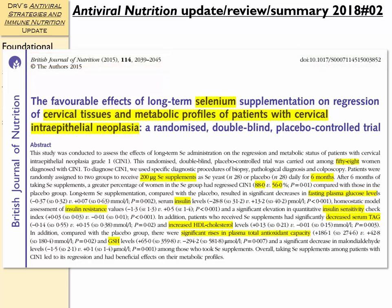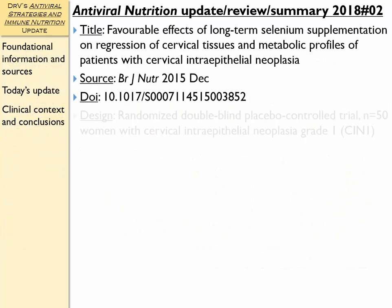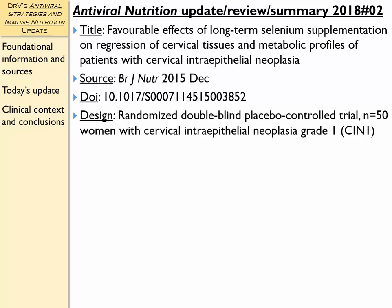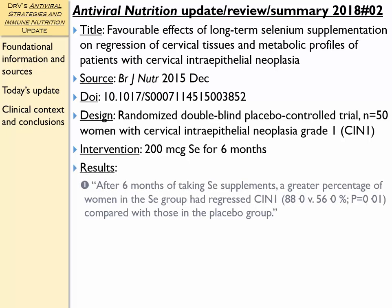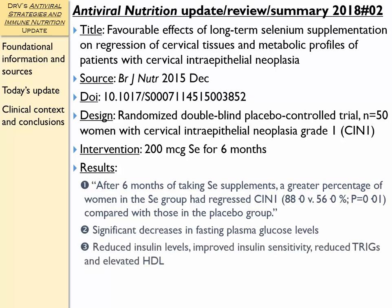You can pause the video if you want to read the abstract. This randomized double-blind placebo-controlled trial included approximately 50 women with cervical intraepithelial neoplasia grade 1. The intervention was 200 micrograms of selenium for 6 months. Results showed that a greater percentage of women in the selenium group had regressed their CIN-1 — 88% versus 56% in the placebo group. They also noted significant decreases in fasting plasma glucose, reduced insulin levels, improved insulin sensitivity, reduced triglycerides, and elevated HDL, suggesting greatly improved metabolic efficiency.